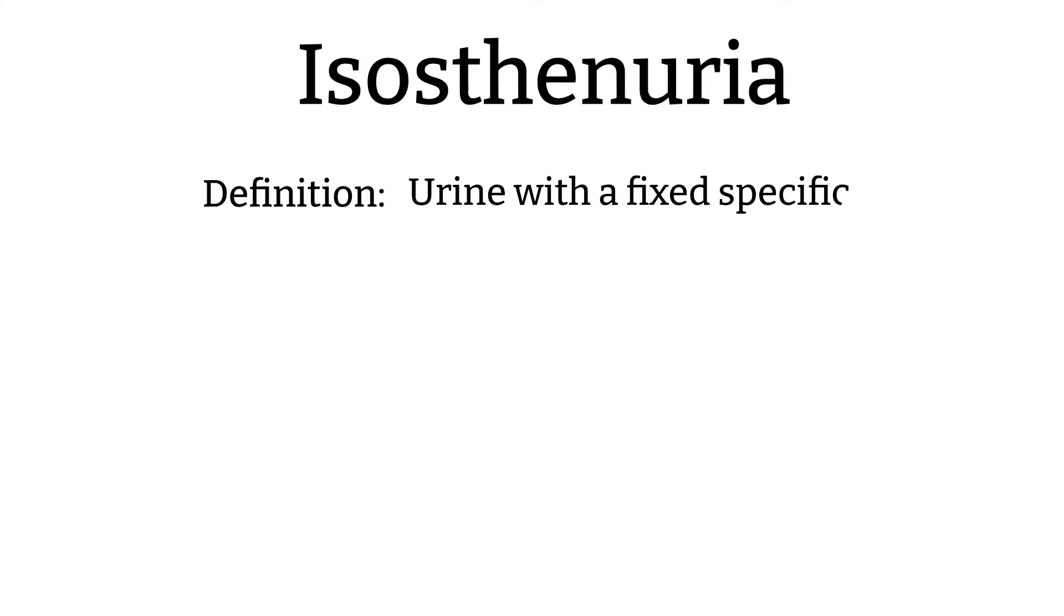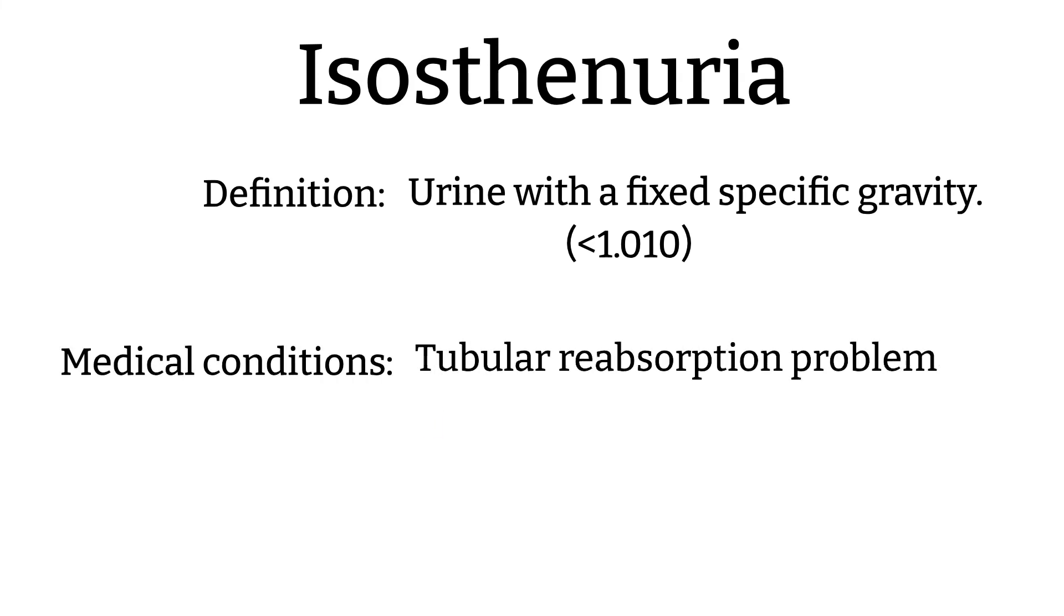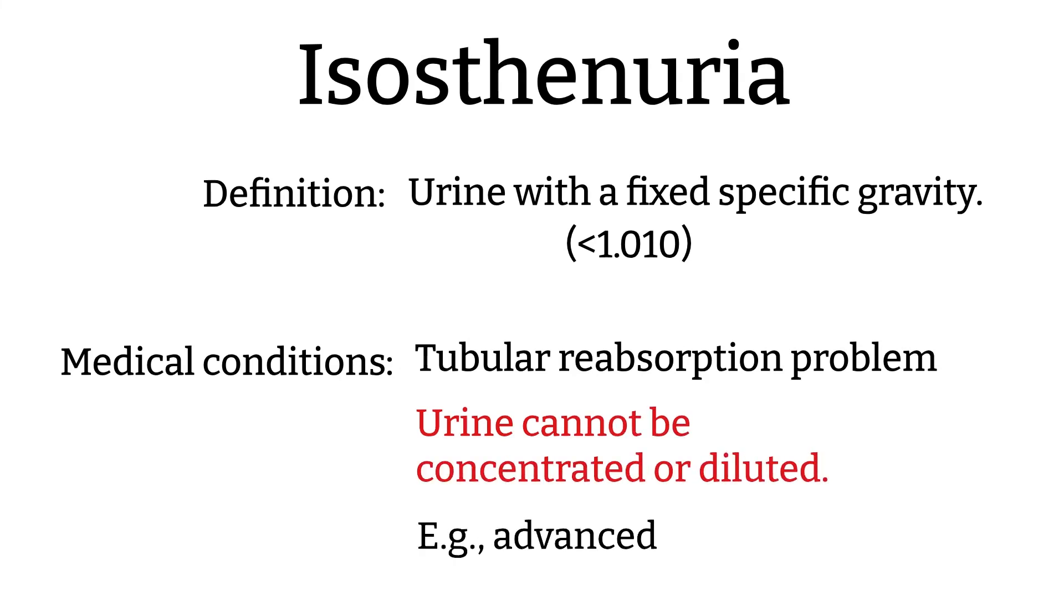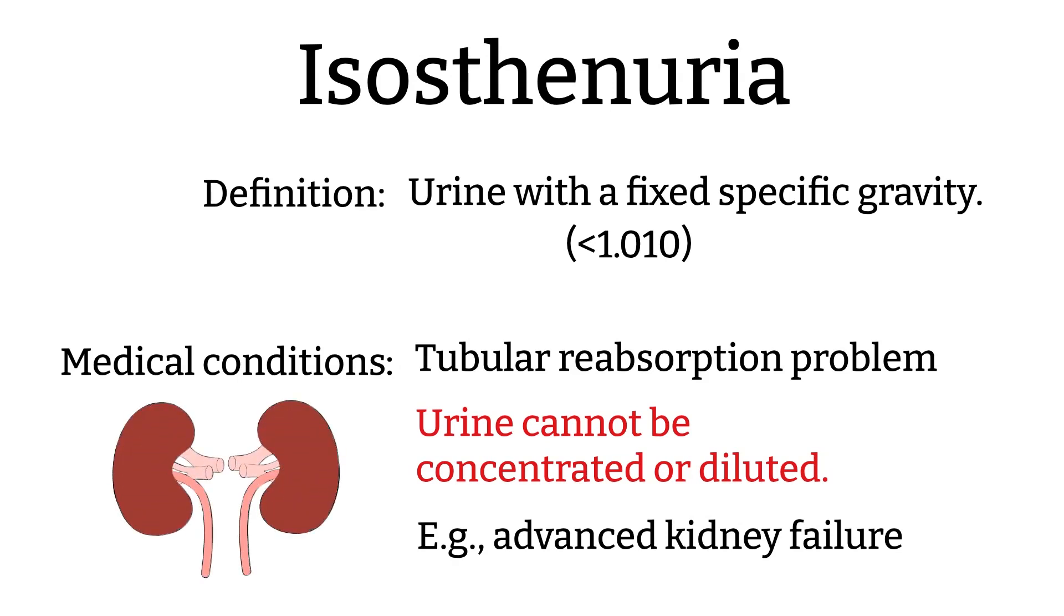Isosthenuria refers to a fixed specific gravity of 1.010 which indicates poor tubular reabsorption. Patients in this condition will have urine specific gravity around 1.010 regardless if they are dehydrated or well hydrated. This condition coincides with advanced kidney failure because the kidney lost the ability to concentrate urine.